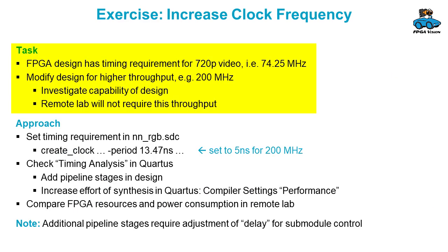To work with the FPGA, you can increase the clock frequency. The FPGA has a timing requirement for 720p video, which is about 75 megahertz, and you can increase that so that the FPGA is also able to process at 200 megahertz. This is an investigation of the capabilities of the design. The Remotelab will not require this high frequency — it's fixed to 720p video — but it helps in understanding the design.